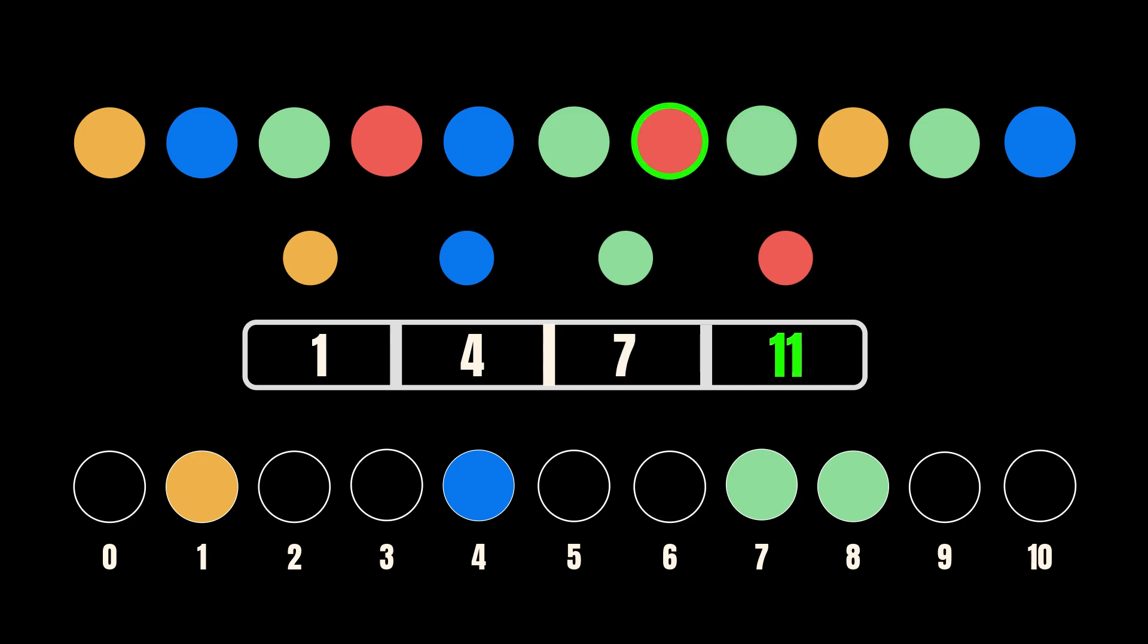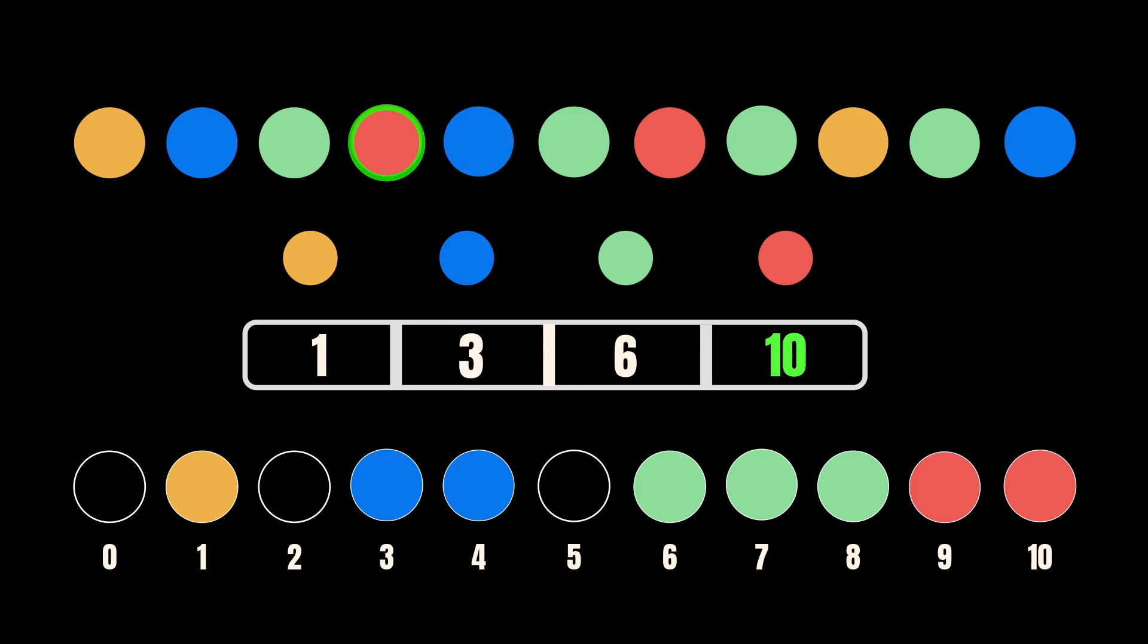The relative ordering will be flipped if we traverse from the left. This is because counts indicate the number of elements that appear before the element in its rightmost position. When we traverse from the end, we place the element in the rightmost position and decrement the count. Therefore, the upcoming elements that are equal to it will keep getting placed to the left, preserving the original order.